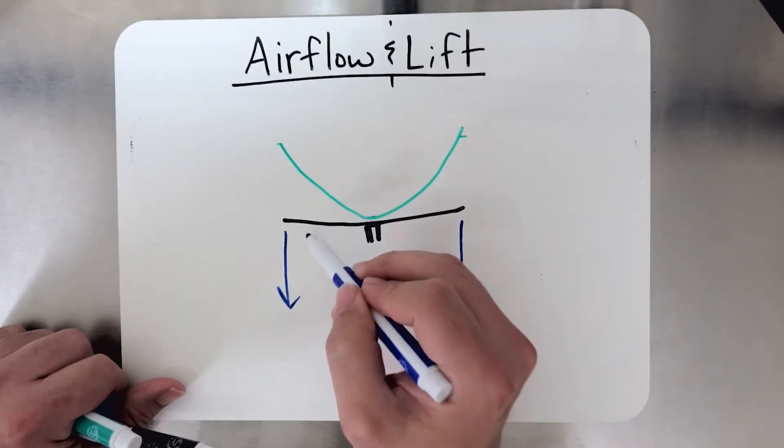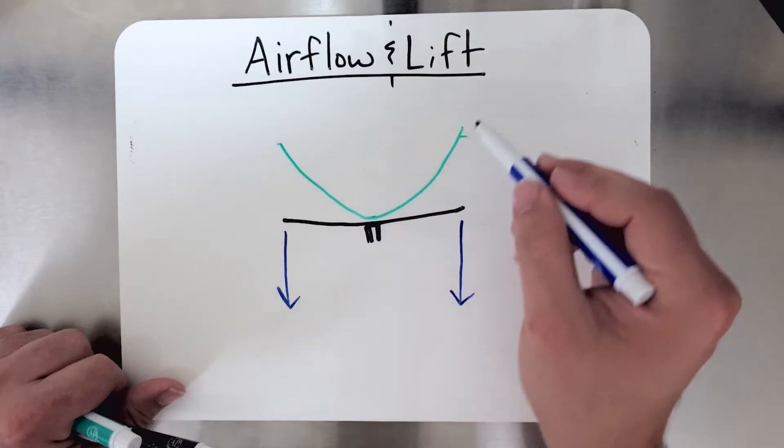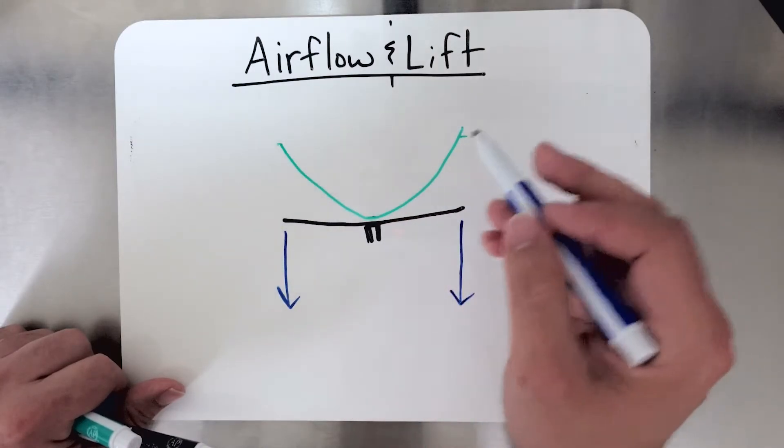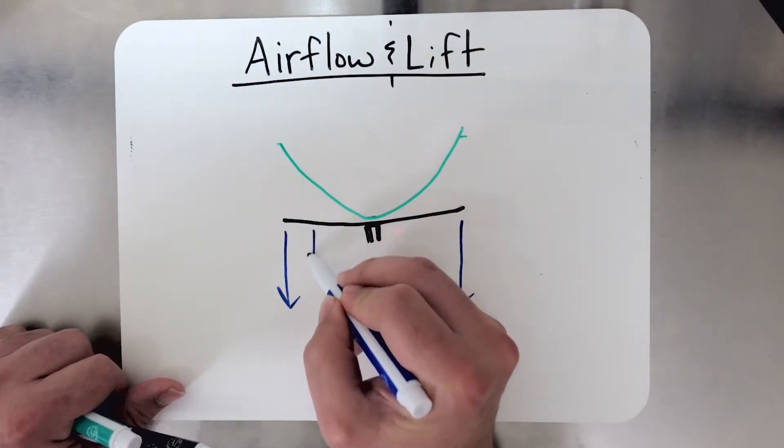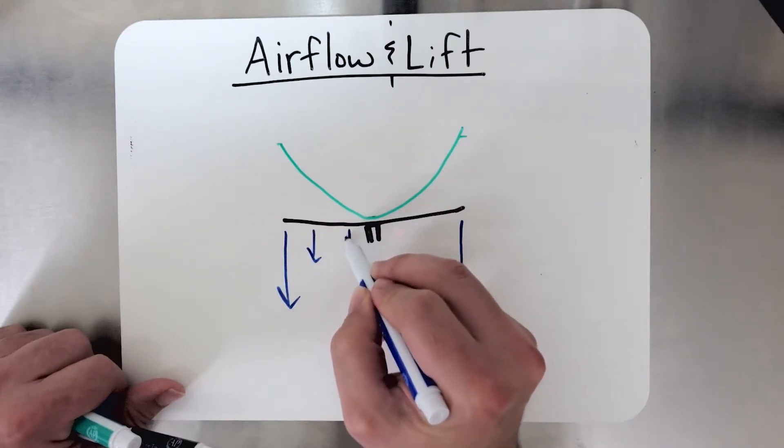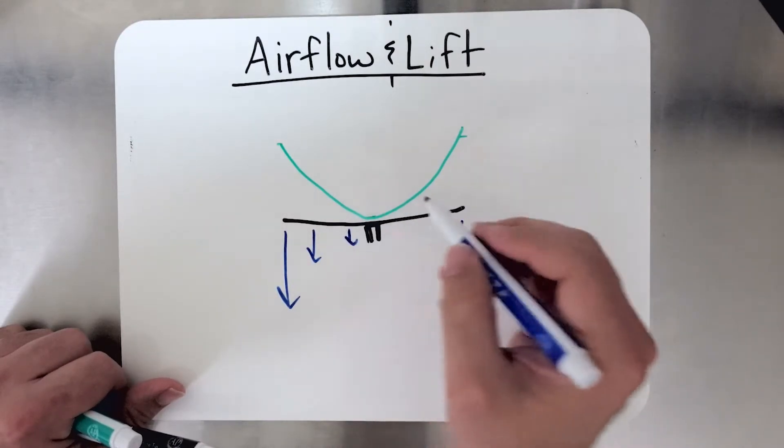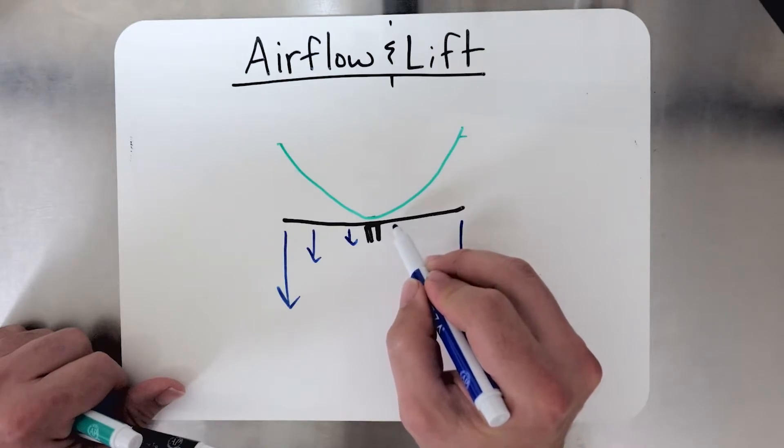And just like velocity decreasing as you reach toward the center of the mast, induced flow decreases as well to the point where it's basically nothing at the center of the rotor system.